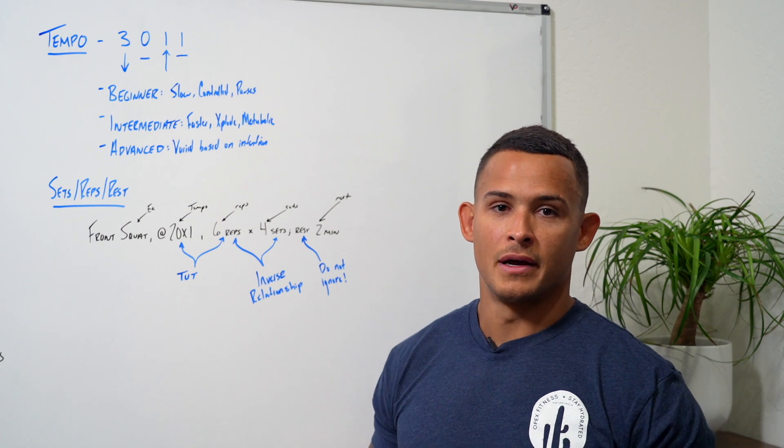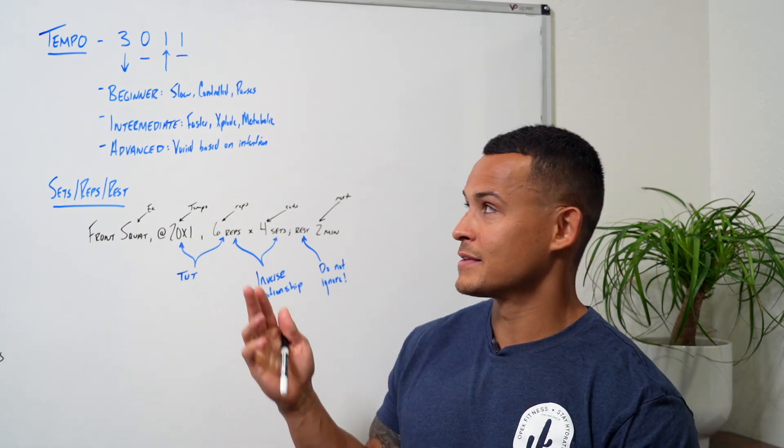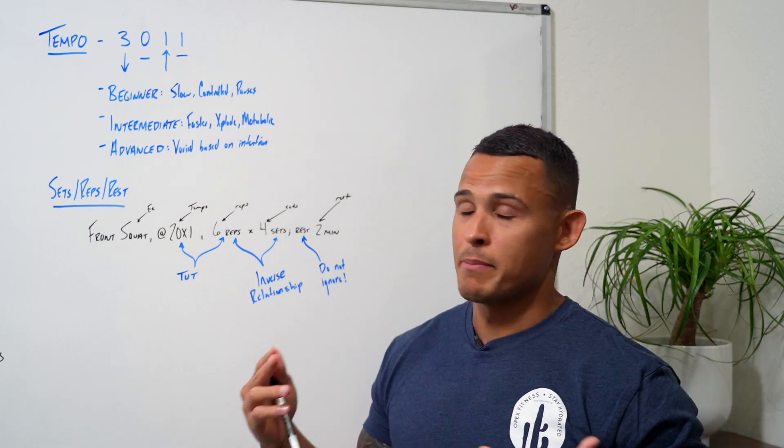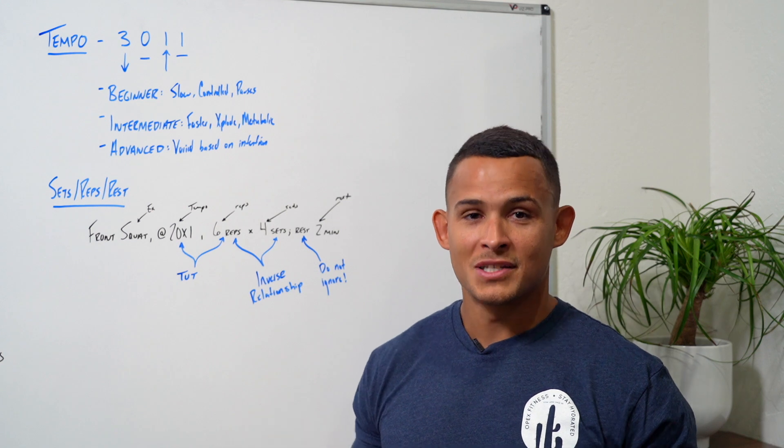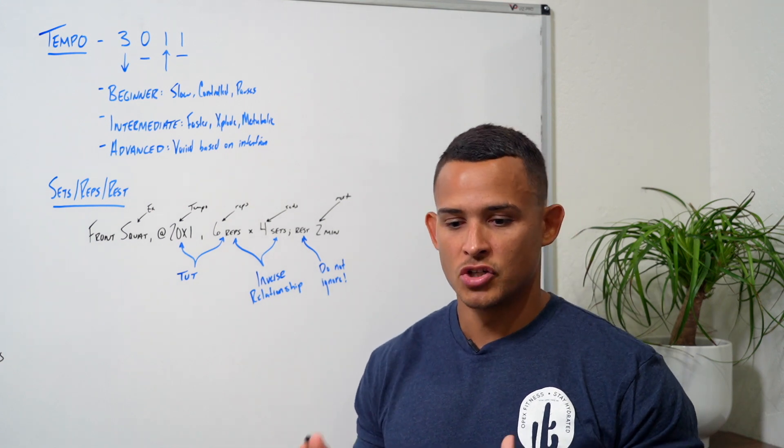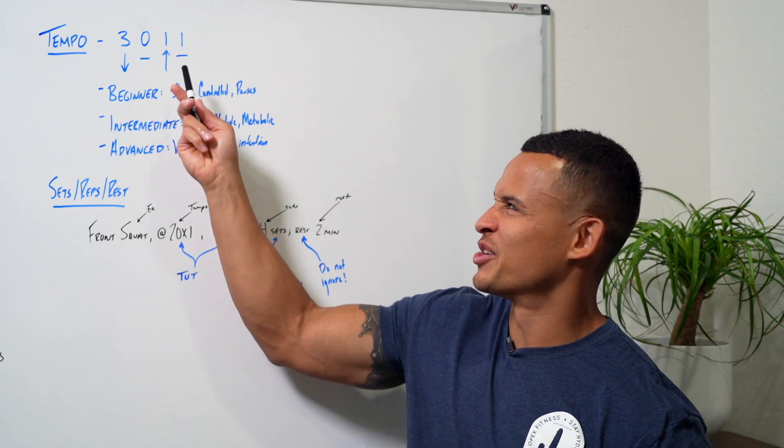We can do strength endurance work with advanced clients. And we can do max contraction work with advanced clients. So how does that relate to tempo? If we're doing max contractions, the goal is to elicit maximal expression. So we're just saying control and explode. So typically that looks something like a 2-0-X-1, right?